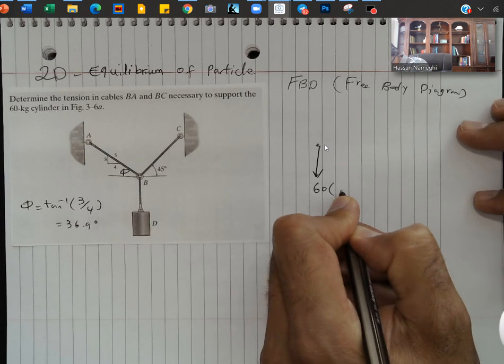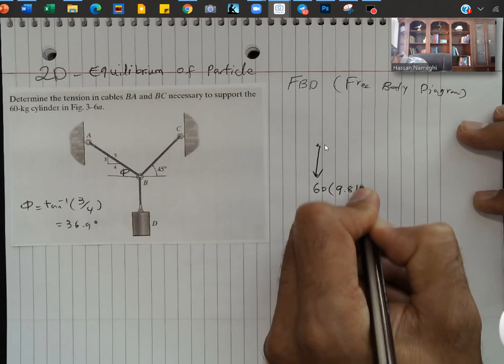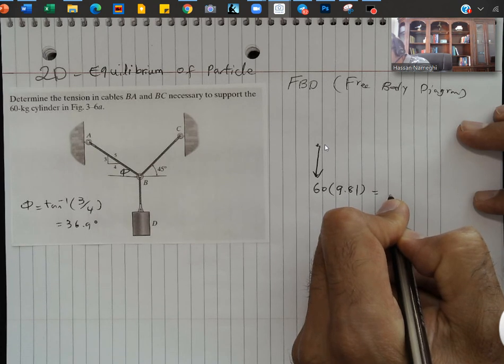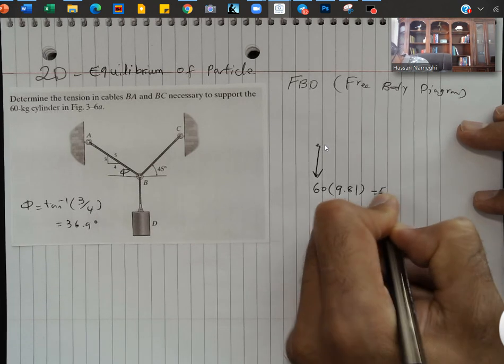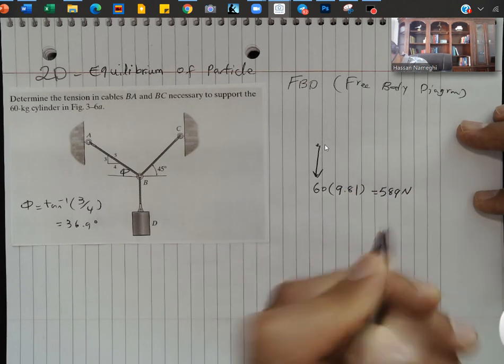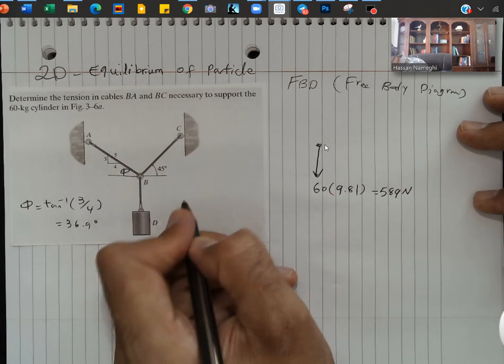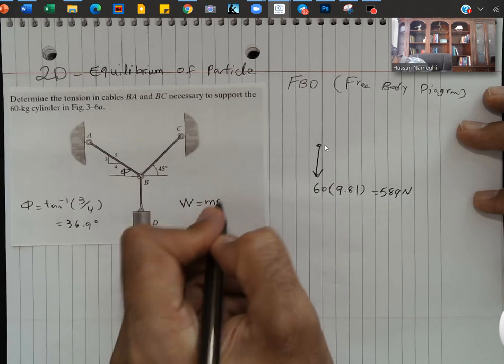So again, 60 kilograms is not a weight, it's a mass. So I need to multiply it by 9.81, which is the gravity, and it will give me 589 newtons.